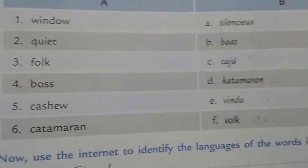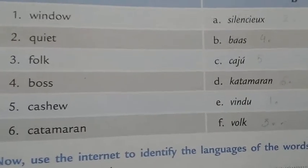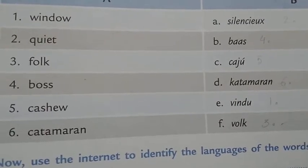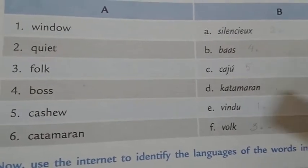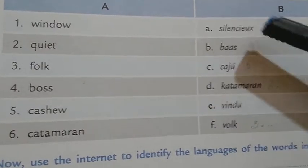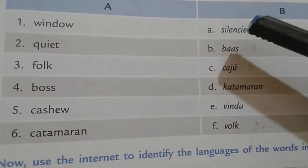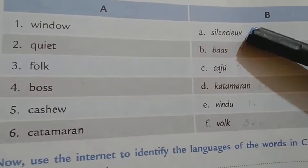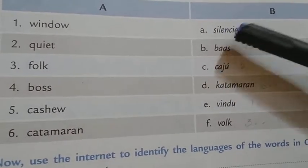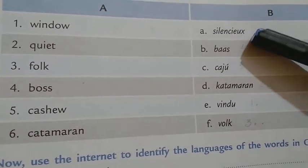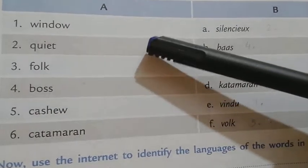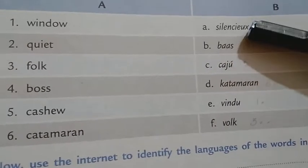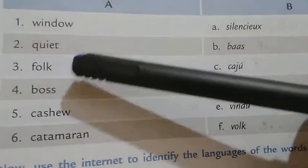Next is 'quiet.' Quiet means absence of noise — that is, silence. The origin of quiet is 'silentius.' Silentius means silence, and that is the original word for quiet.